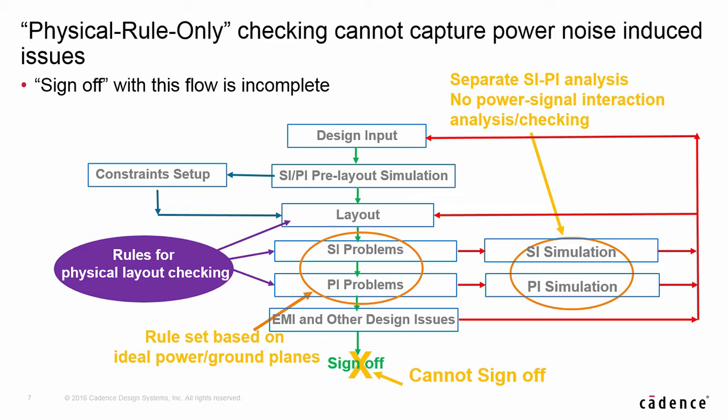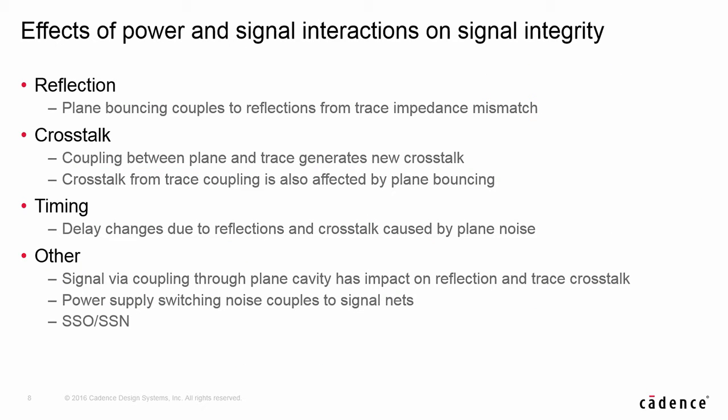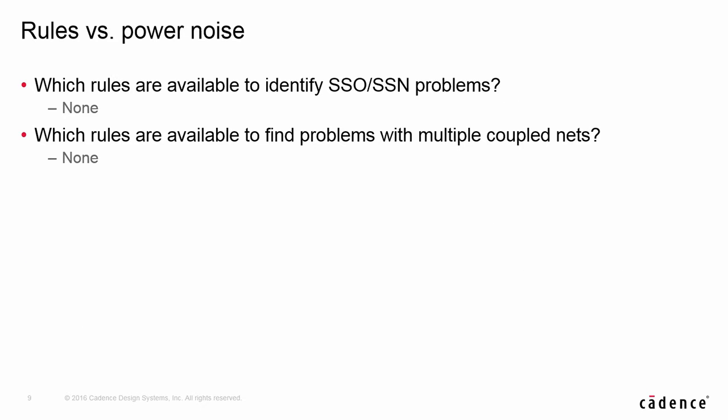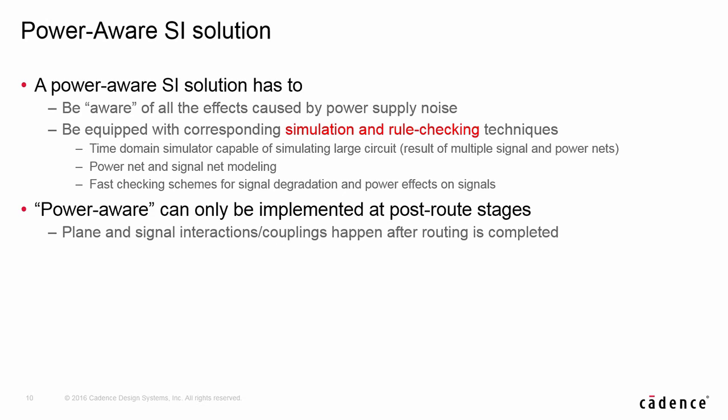PCBs signed off with this type of flow will have problems with signal degradation caused by power noise. The worst of all, designers don't even know it. The question is: how do we make the sign-off flow valid again by including identification of power noise-introduced problems? First, we need to understand that power noise couples to signals and will change all classic SI problems such as reflection, crosstalk, and timing. SSN and power supply switching are typical concerns. Is there any rule available to check the power-induced problems in a design? The answer is no, because the plane noise impact on signals is difficult to model and may not be easy to derive simplified formulas for practical use. So how do we check the problems?